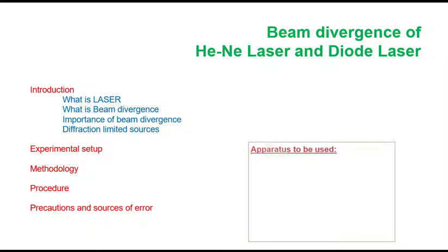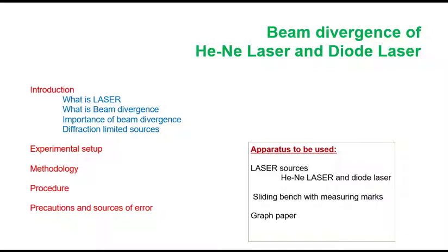In the apparatus, we will use the laser sources in which two laser sources for helium neon laser and diode laser will be used. A sliding bench with measuring marks is required, graph paper for spot size measurement and the photo detector will be used.